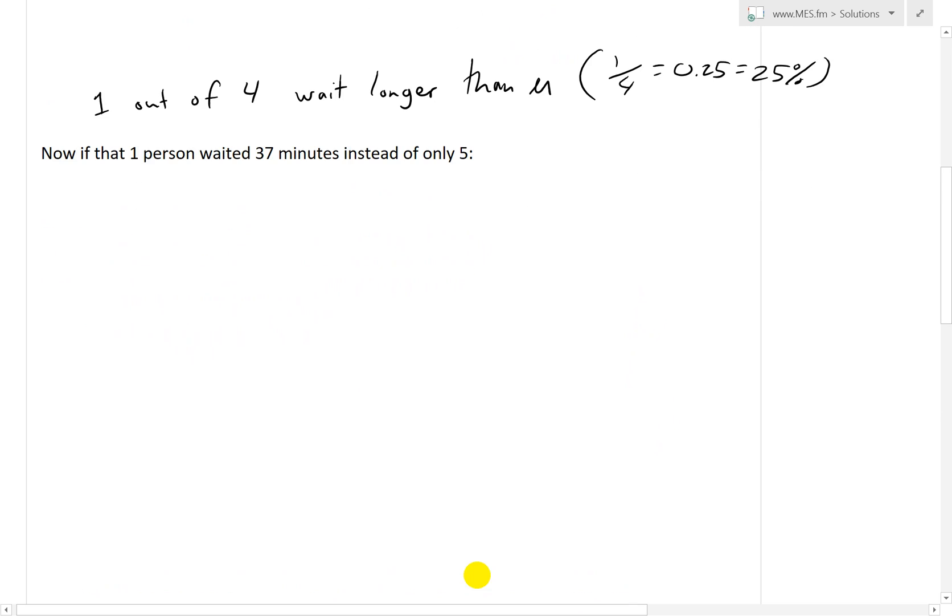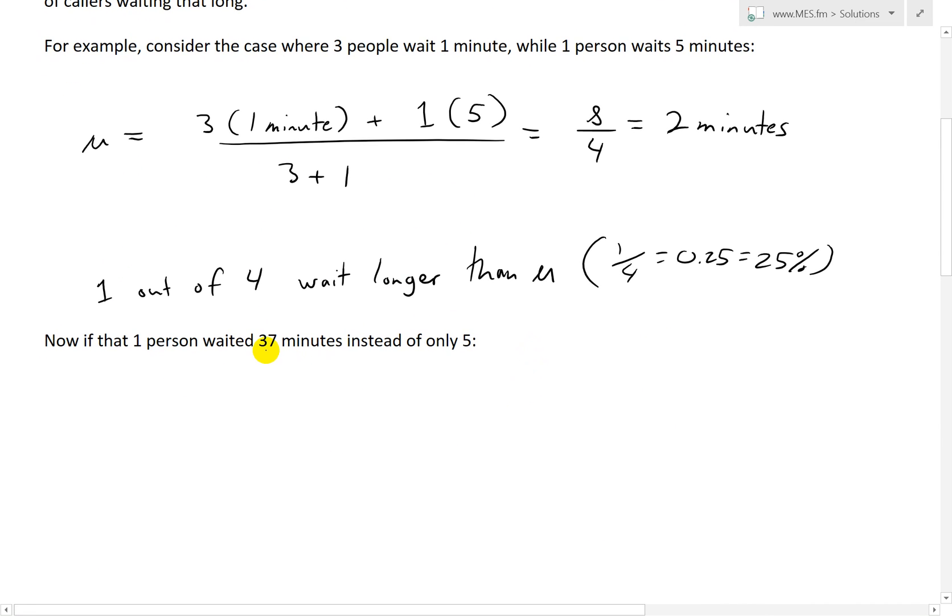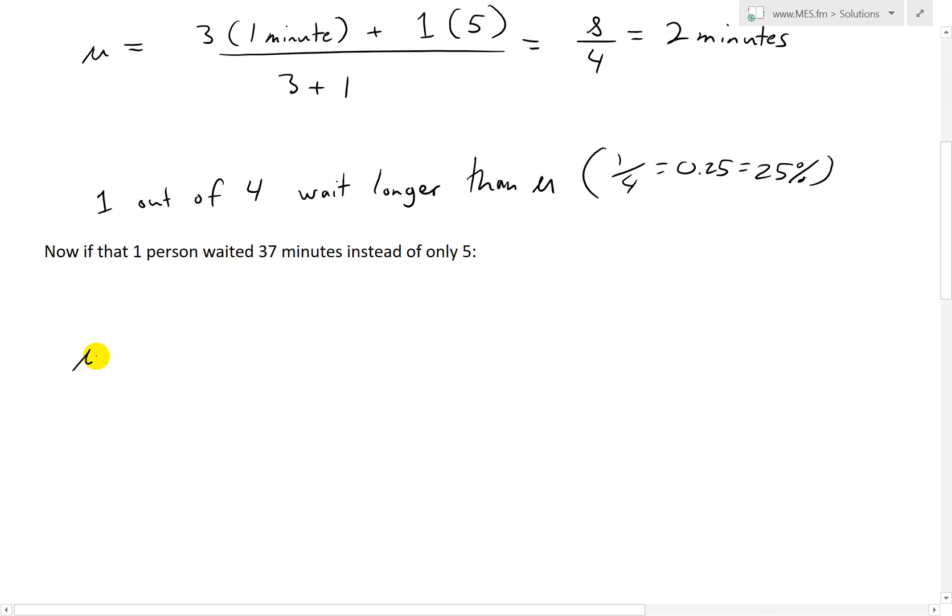Now, let's say if that 1 person, instead of waiting 5 minutes, waited 37 minutes, just to show you how the average can change without this percentage changing. So 3 times 1 minute plus 1 person times 37 minutes, divided by 3 plus 1, which is 4. This is 3 plus 37, that's 40 over 4, which equals 10 minutes.